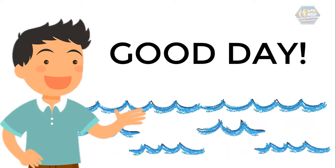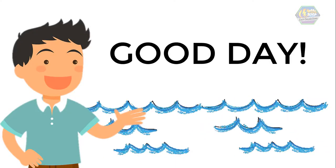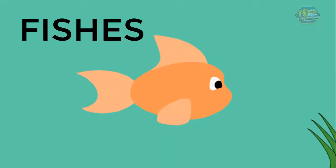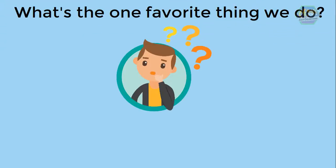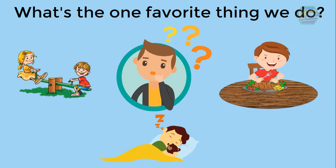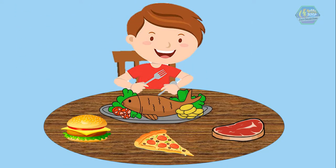Good day learners, this is Easy Engineering. For today's topic, we're going to talk about fish. What's our favorite thing to do — is it playing, is it sleeping, or is it eating? Well, why not all of them! But eating is definitely at the top: those burgers and pizza, those juicy meats — but some of us like to eat fish.